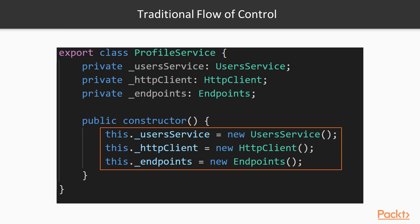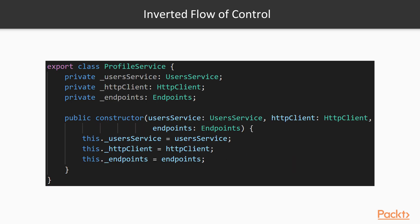What does dependency injection suggest? It suggests that we inverse this flow of control and request the dependencies in the constructor. Notice that we are no longer using new to create instances of the dependencies — the dependencies are already passed to the constructor already initialized. Using this approach, the profileService class is no longer responsible for initializing itself. It does not need to know how to create instances of its dependencies, because it receives them from the constructor already initialized. But if the profileService does not initialize its dependencies, then who does?